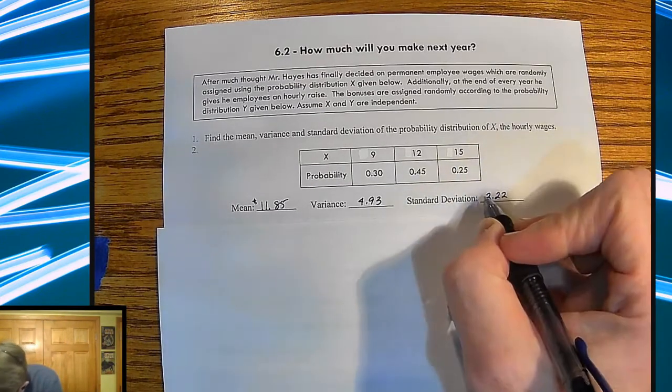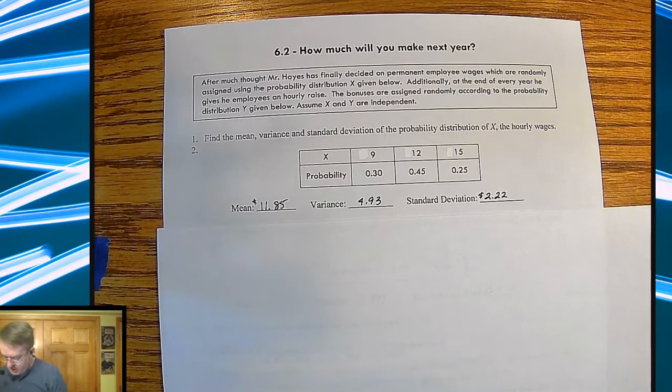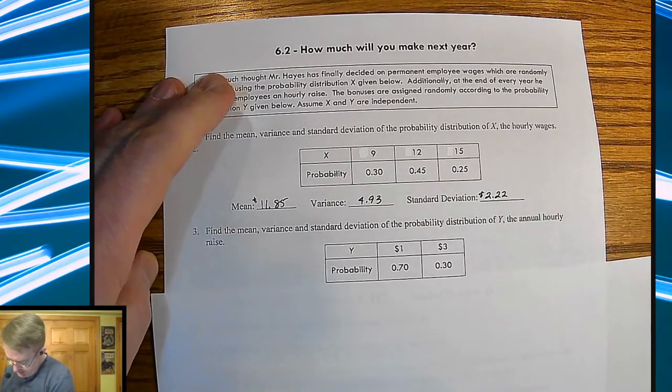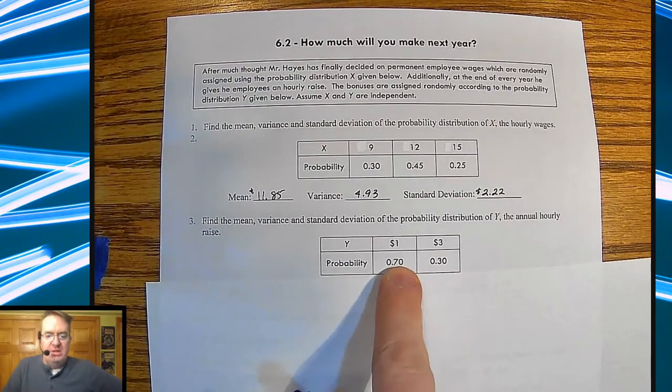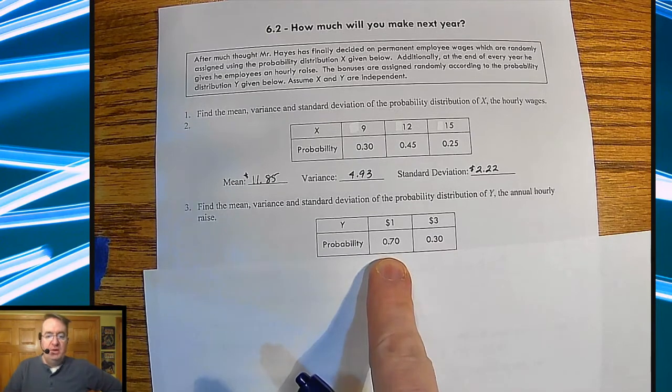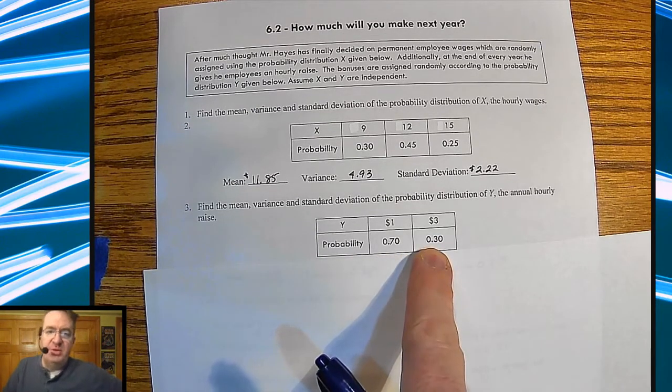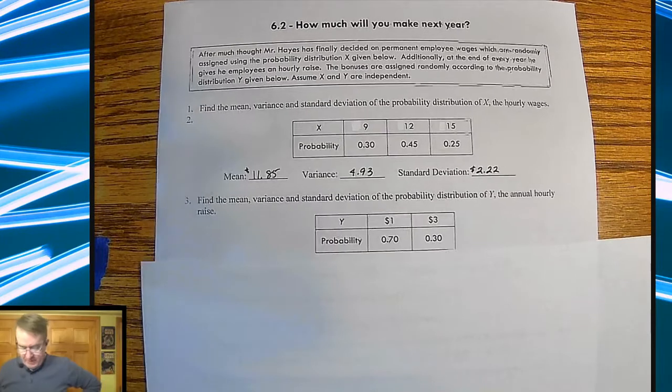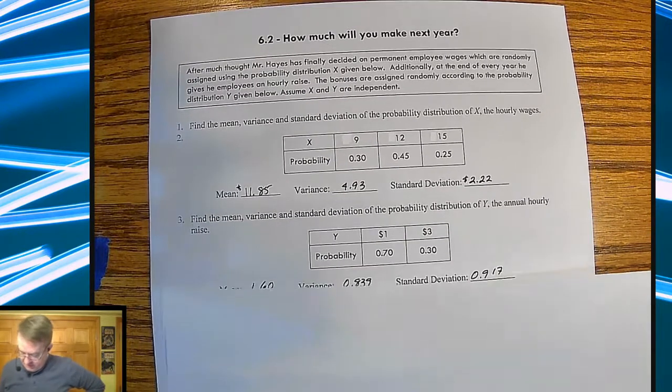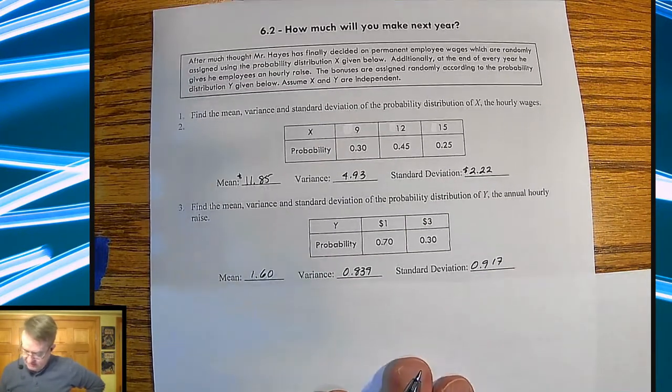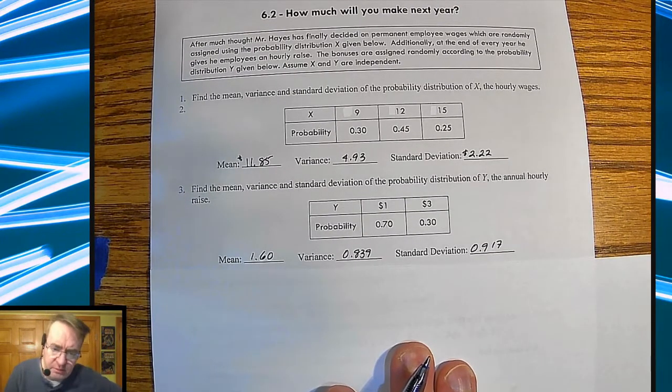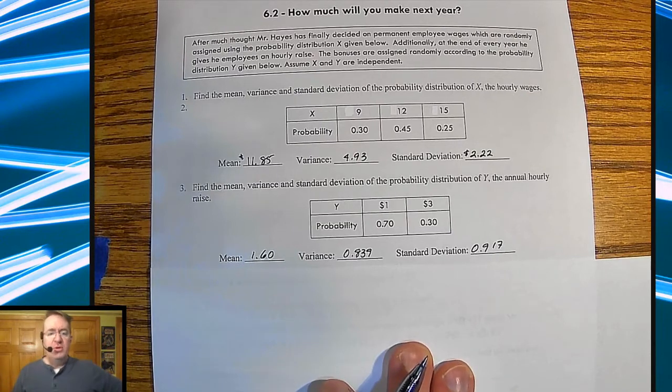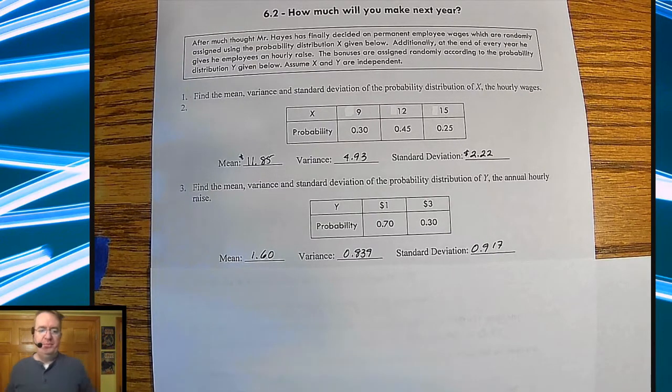Your variance, which is what you calculate after you find the square of the differences, the sum of the squares of the differences, is 4.93. And then your standard deviation is going to be $2.22. So here is the randomness at the end of every year that everybody's going to get for a raise. The probability, either people are going to get a $1 raise or a $3 raise. There is a 70% chance that you get a $1 raise, and a 30% chance you're going to get a $3 raise.